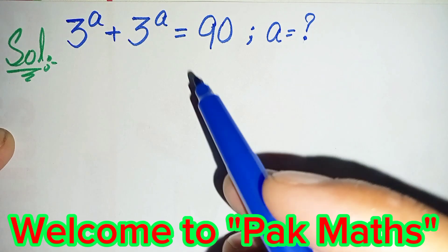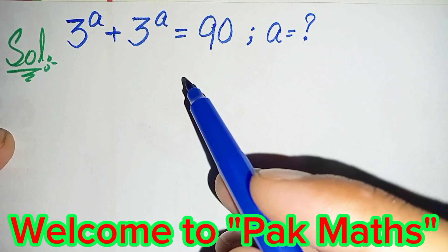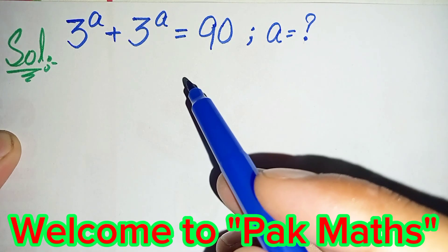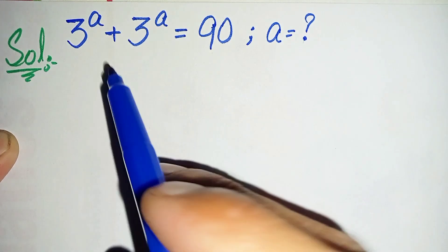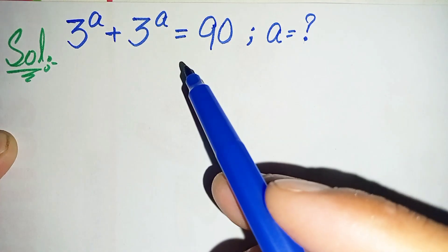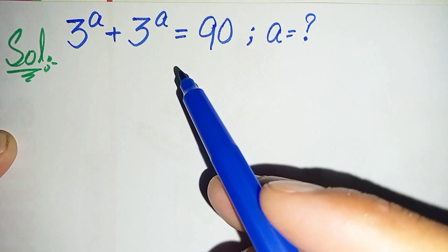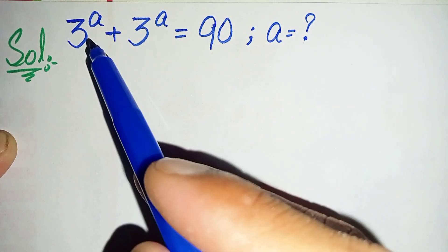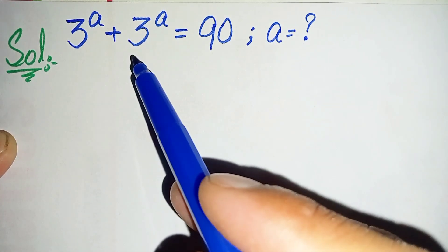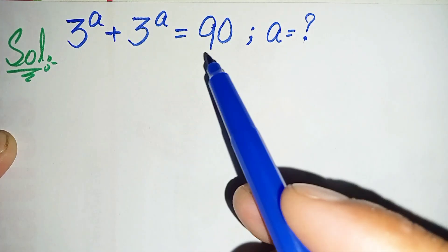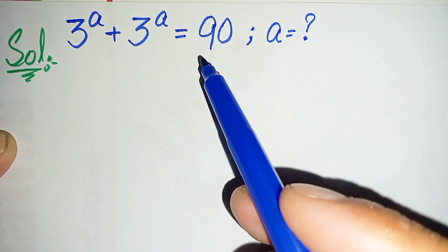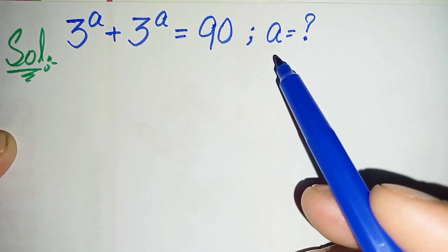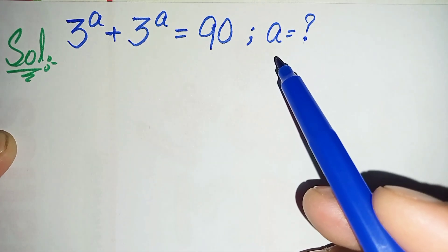Hi everyone, welcome to Park Math. In this video I'm going to solve this nice exponential equation: 3 to the power a plus 3 to the power a is equal to 9. We will try to find the value of a.